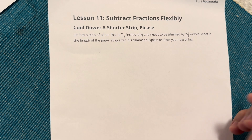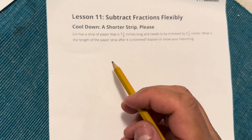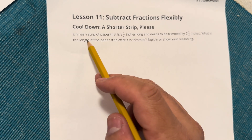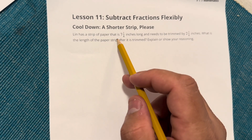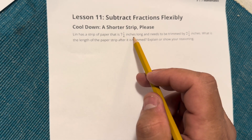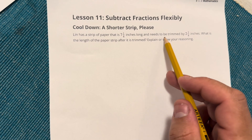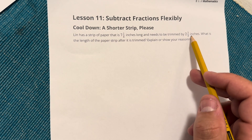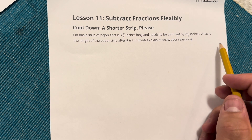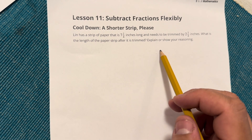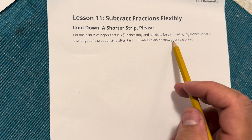Let's take a look at this problem from our cool down. Lynn has a strip of paper that is seven and one-fourth inches long and needs to be trimmed by two and three-fourths inches. What is the length of the paper strip after it is trimmed? Explain or show your reasoning.